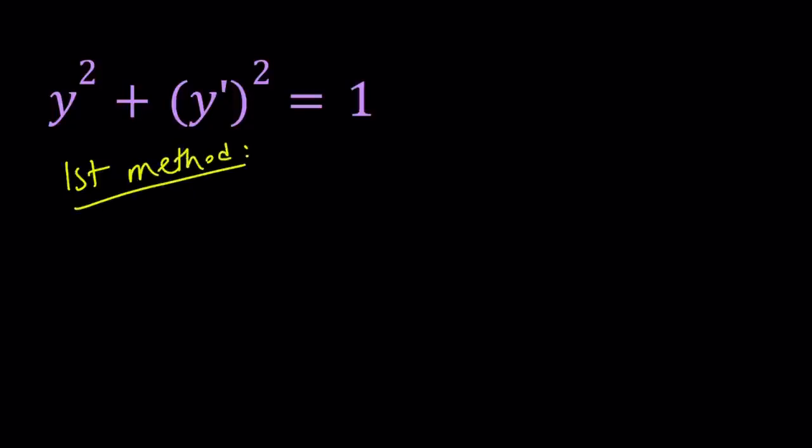For the first method, we assume y is differentiable with all the good properties. Let's go ahead and differentiate both sides. The motivation behind it is I want to get rid of the squares by differentiating both sides, because the chain rule is going to apply, and we're going to get something nice from here.